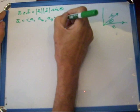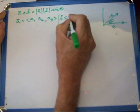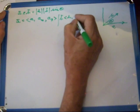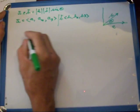And vector B has coordinates B1, B2, and B3.